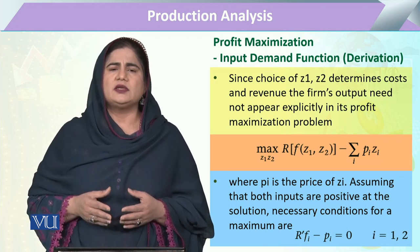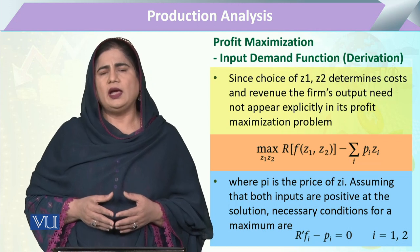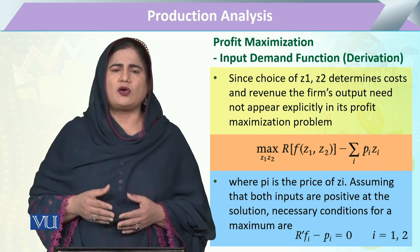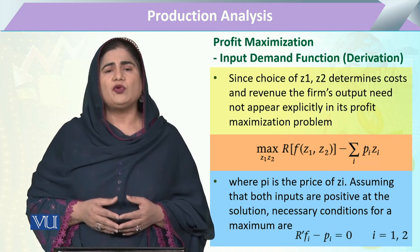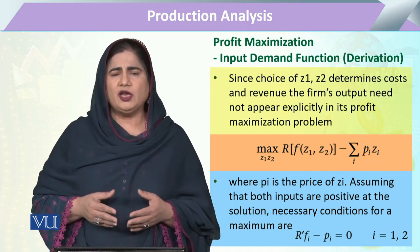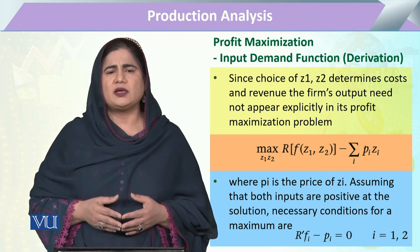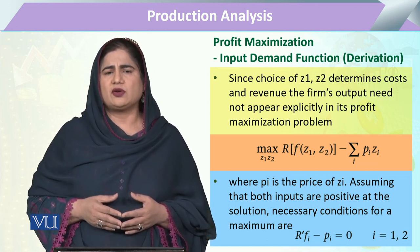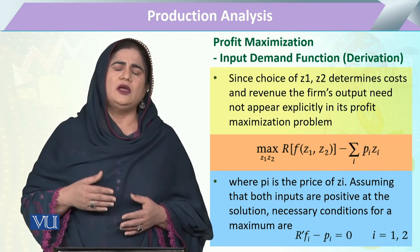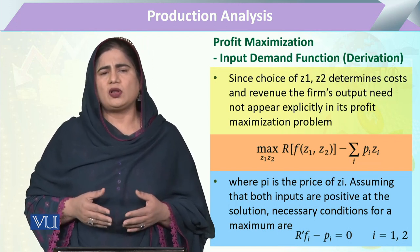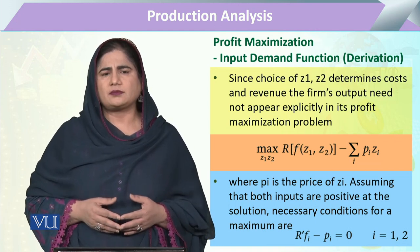Revenue is price p multiplied by output y, and by deducting cost from revenue we get profit. When we want to maximize revenue, we set up the maximization equation subject to a constraint, where the constraint is the firm's budget or total cost.